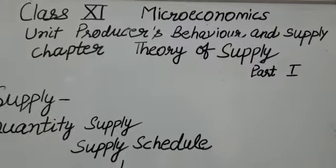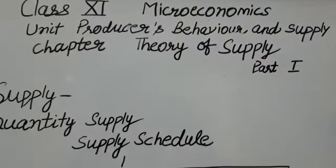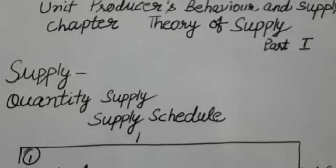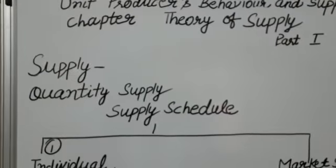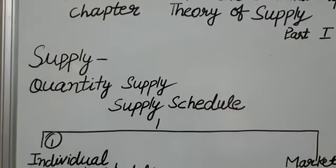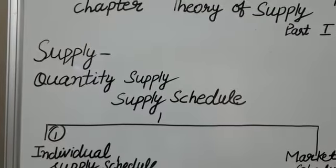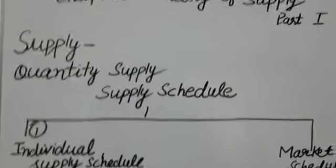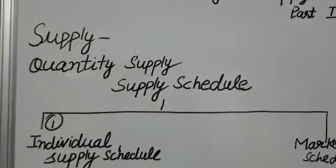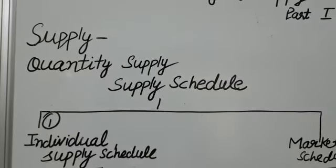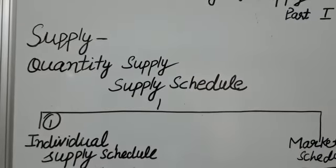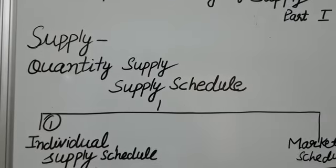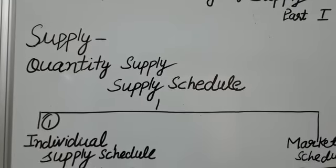Microeconomics is also referred to as the Theory of Price. Prices in the market are determined by forces of demand and supply. So far we have studied about the demand side. Today we are going to study about the supply side.